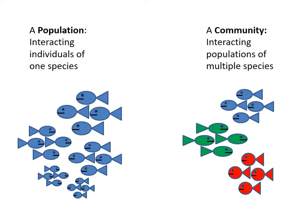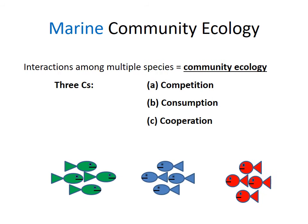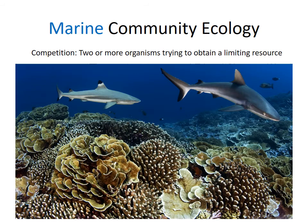Moving on to the next level of ecology: when there are populations of multiple species in an area interacting with each other, that's a community. In community ecology, both in the ocean and anywhere, we need to remember the three C's of community ecology — a helpful mnemonic since community starts with C. The three C's are: competition, consumption, and cooperation.